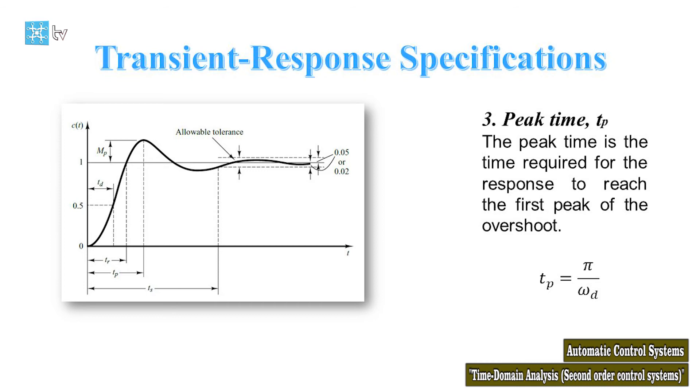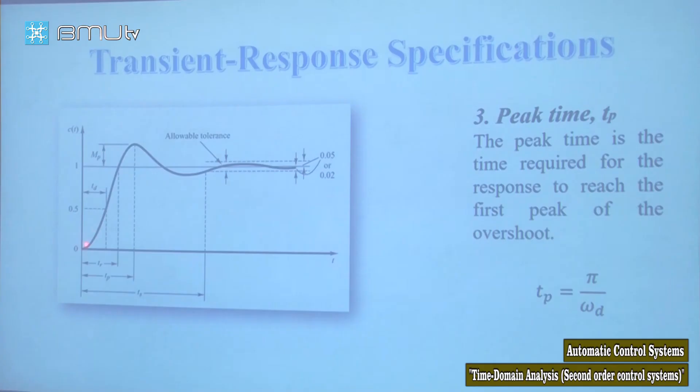The peak time is the time required for the response to reach the first peak of the overshoot. It is obtained using the formula: π / ω_d.